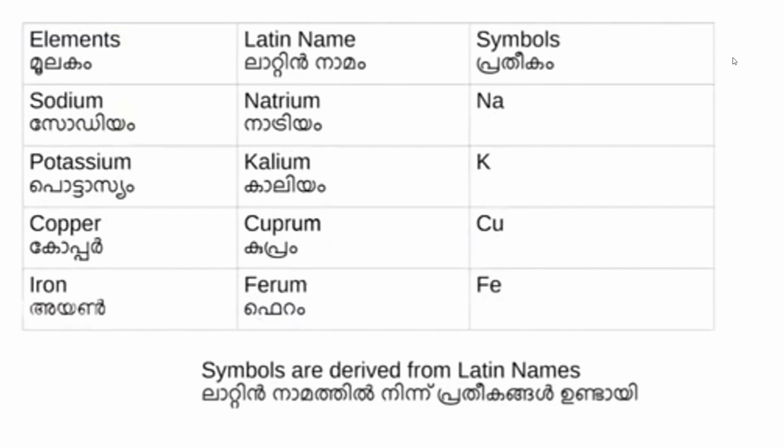Sodium — Latin name Natrium, symbol Na. Potassium — Latin name Kalium, symbol K. Copper — Latin name Cuprum, symbol Cu. Iron — Latin name Ferrum, symbol Fe. These symbols use the first and second letters of the Latin name.